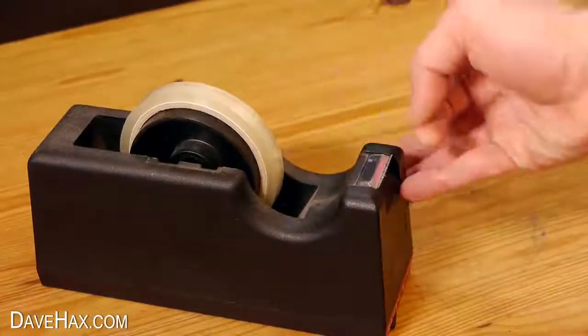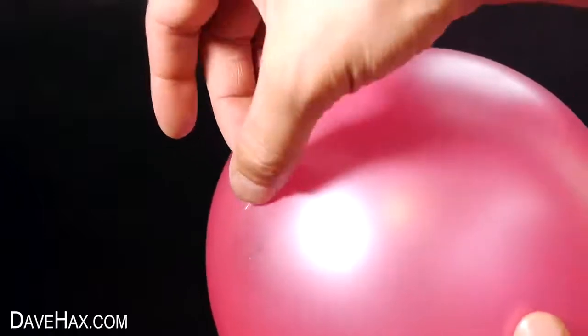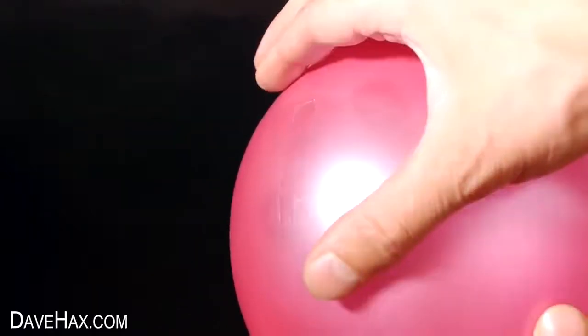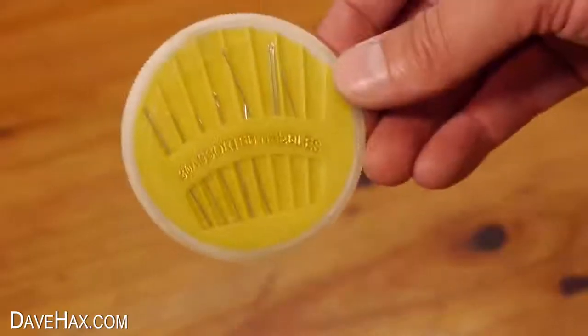For the next experiment, I'm going to take a piece of tape and stick it to the surface of a balloon like this. This is going to allow me to push some sewing needles straight into the balloon without popping it.